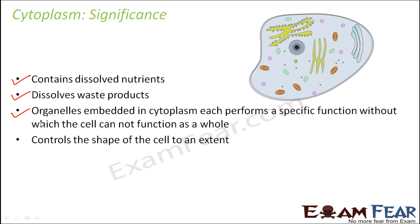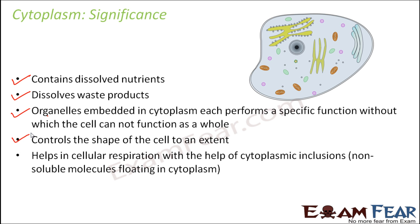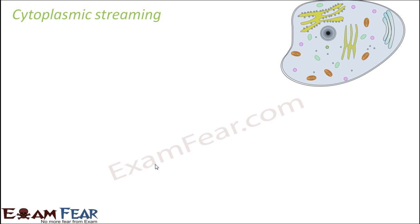Cytoplasm controls the shape of the cell because it forms the basic material — the base of the cell. It also helps in cellular respiration with the help of cytoplasmic inclusions. Inclusions are non-soluble molecules floating in the cytoplasm, such as fat bodies. Through these inclusions, cytoplasm helps in cellular respiration — the process by which glucose is utilized to produce carbon dioxide, water, and energy in the form of ATP molecules.